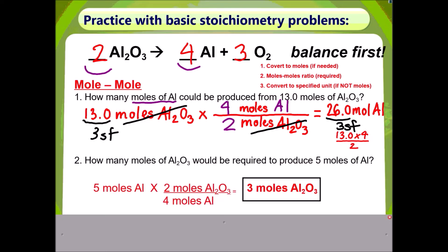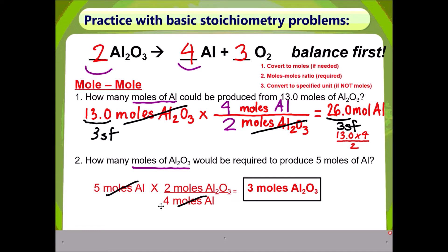Welcome back. Once again, we start with the given, which is 5 moles of aluminum. Our given is already in moles, so you don't need Step 1 — you can go straight to Step 2. In the moles-to-moles ratio, moles of aluminum must be on the bottom in order to cancel out with the given. Moles of aluminum oxide will be on top in order to answer the question. The numbers come from the balanced equation. Therefore, you have 5 moles of aluminum times 2 moles of aluminum oxide, divided by 4 moles of aluminum, which equals 3 moles of aluminum oxide.